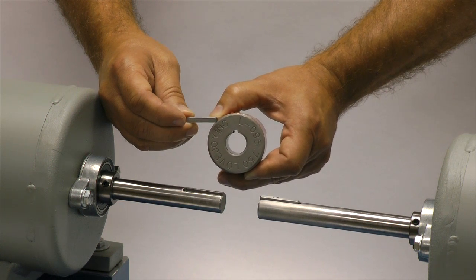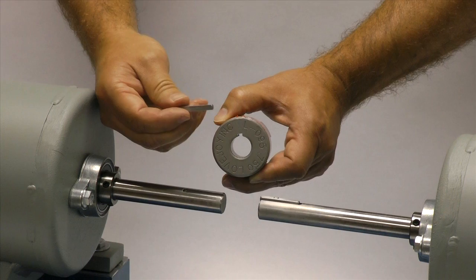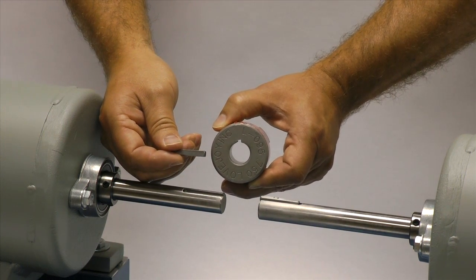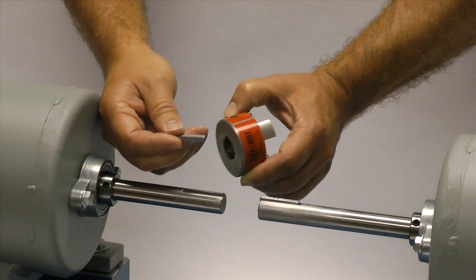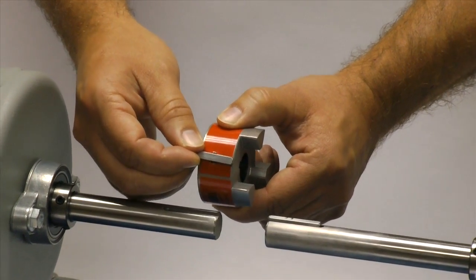If the shaft and the hub both have keyways, make sure you have the appropriate key ready to use when performing this installation. Ideally the key should be the same length or slightly longer than the hub to transmit the maximum allowable torque.